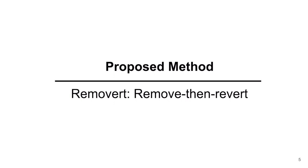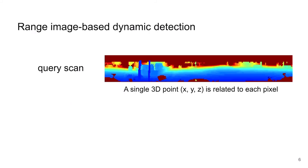From now, we introduce our method named Removert. Our basic dynamic removal pipeline is based on the range image. We assume we are using a modern 3D scanning LiDAR, and for a single query scan, a range image is acquired like this. A single 3D point is related to each pixel, and a color of pixel indicates its range value. Red is further, and blue is near.